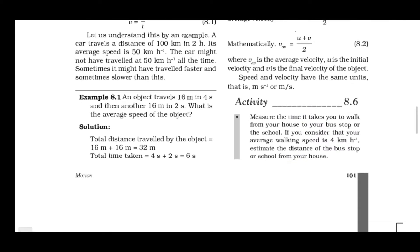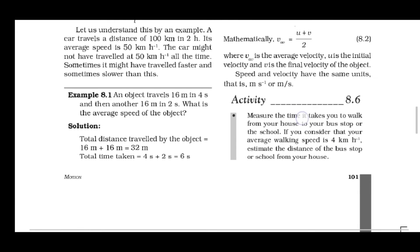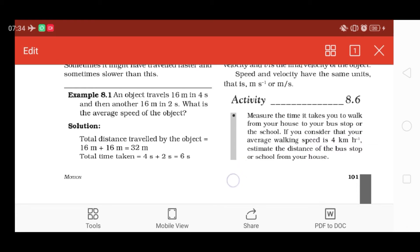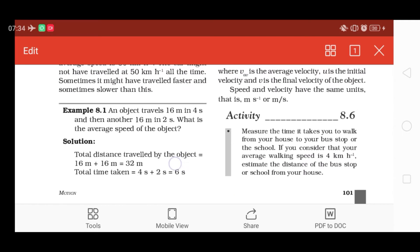So firstly, we are going to take one example on average speed. Example 8.1: An object travels 16 meters in 4 seconds and then another 16 meters in 2 seconds. In the first 4 seconds the object travels 16 meters, and then another 16 meters in 2 seconds.